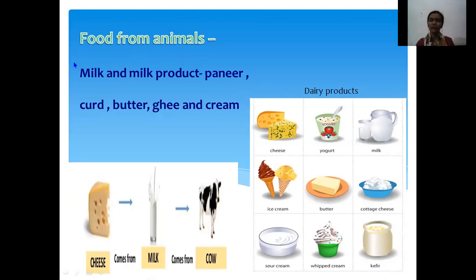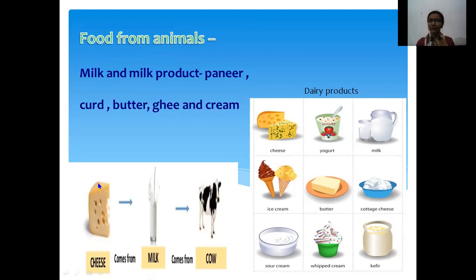The main food we get from animals is milk, and the things made from milk are known as milk products, such as paneer, curd, butter, ghee, and cream. These are the dairy products. They are made from milk — for example, the cow gives us milk, and cheese is also made from milk.